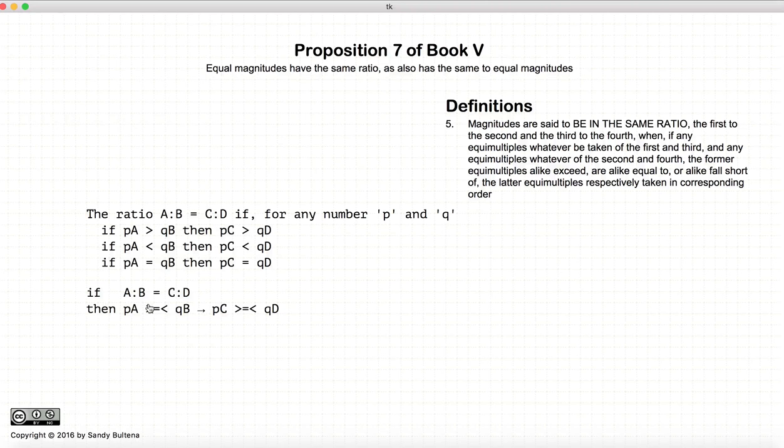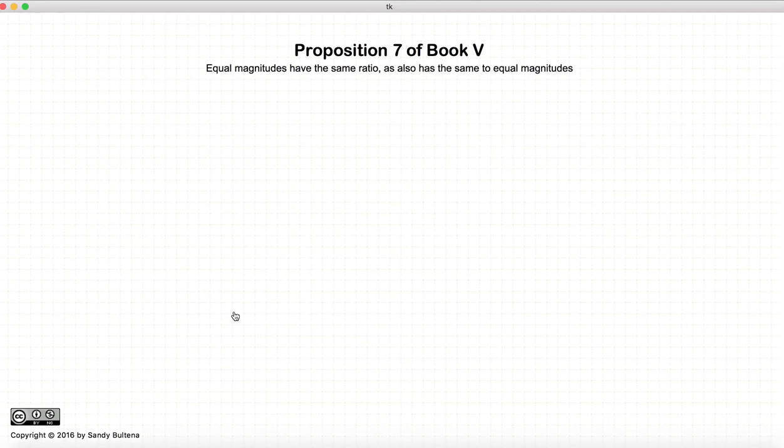We are going to use this definition in this proposition. So I just wanted to make sure that you remembered what it meant. So let's carry on to the actual proposition. We have three lines a, b, and c, a and b are equal, and c is not equal.